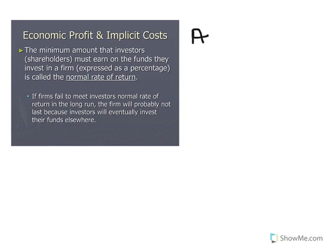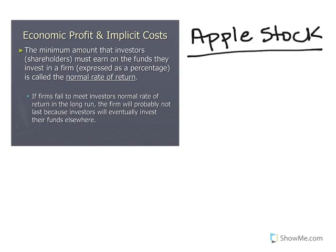Let's say I decide to buy shares of Apple stock. Apple gives me a prospectus showing the past performance of their stocks, and based on my analysis I assume I can get a 5% return. When we talk about somebody's return on their equity capital in a firm, we express it as a percentage and call that the normal rate of return.